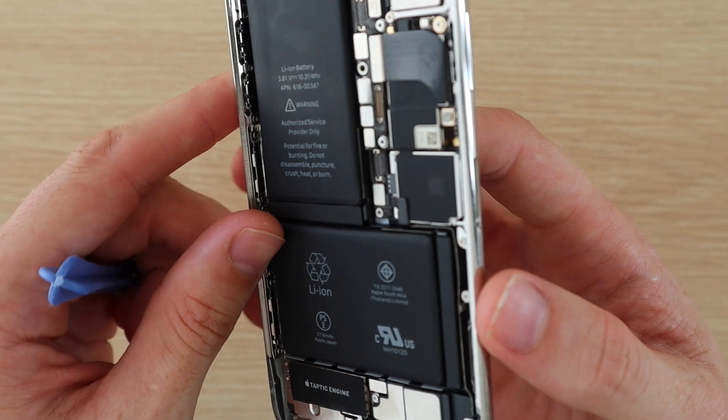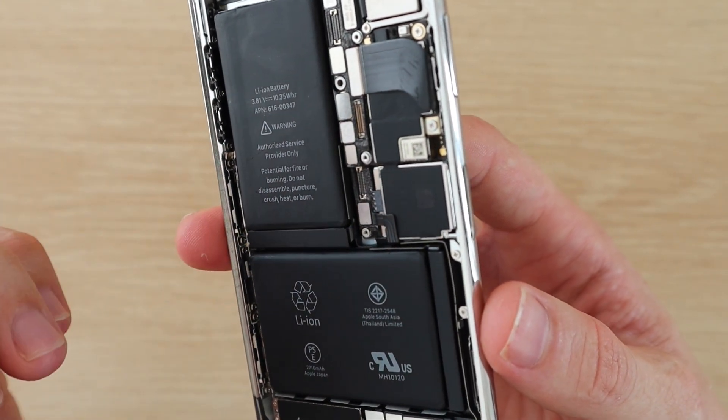That gap between the SIM card tray and the body of your phone is where you were able to see the water damage indicator.